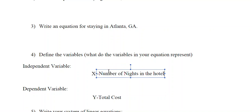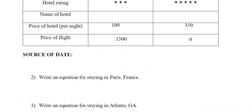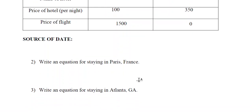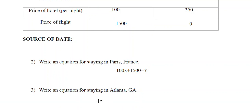Now let's look at how we find our total cost. If we're staying in a hotel that costs a hundred dollars a night, then one night is a hundred dollars, two nights is two hundred dollars, five nights is five hundred dollars, and x nights would be one hundred times x. Because this is Paris, we also include our fifteen hundred dollar flight, giving us our total cost for Paris. Atlanta is different — there's no flight cost, so it's just the price of the hotel times the number of nights.